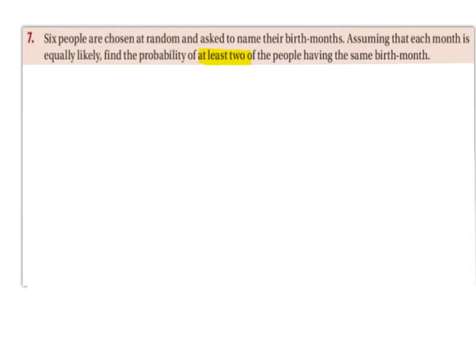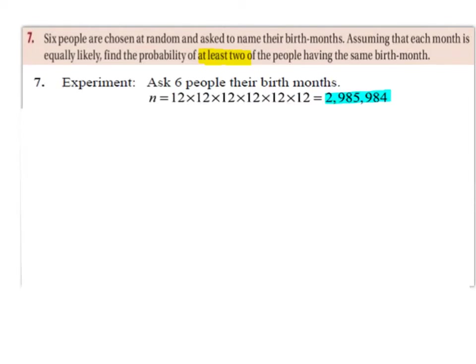So let's start off with our experiment. The experiment is to ask six people their birth months. So N is equal to 12 by 12 by 12 by 12 by 12 by 12, which is 2,985,984.